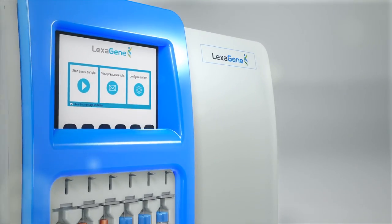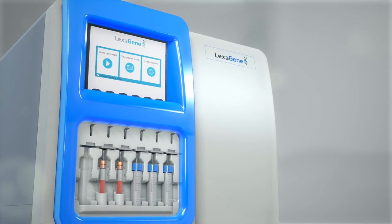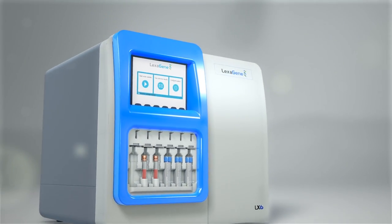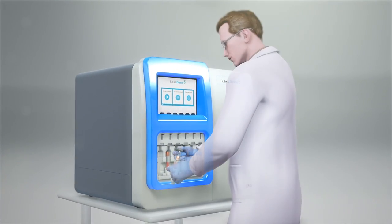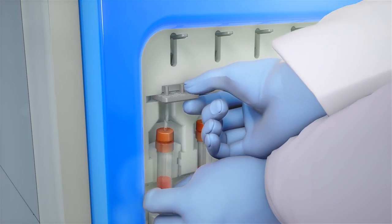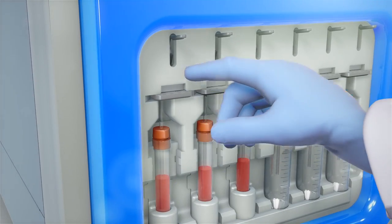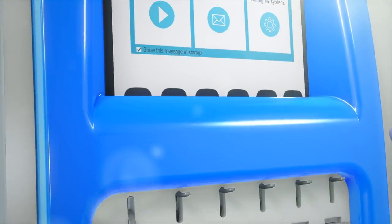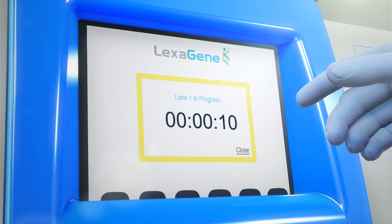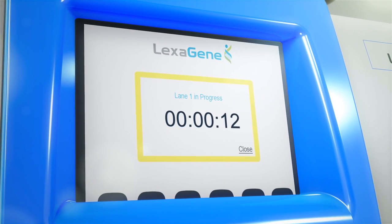Announcing LexaGene's LX6 Open Access Pathogen Detection Instrument. LX6 is designed to be placed in facilities where personnel can load collected samples onto the instrument to be screened for up to 22 pathogens at once. Initiating sample processing takes less than one minute.